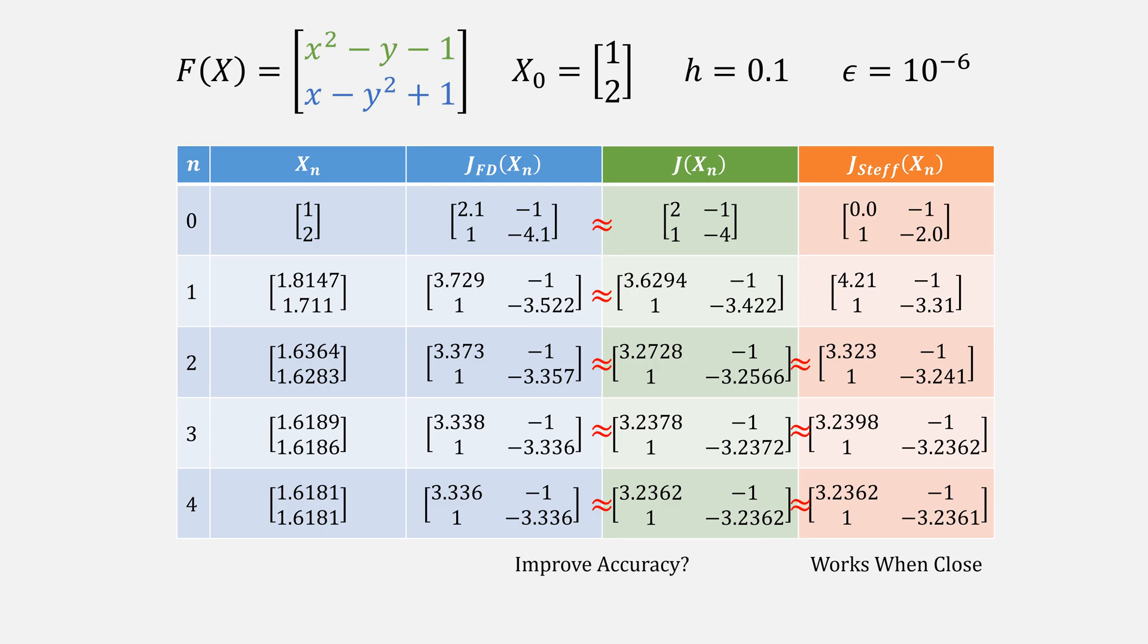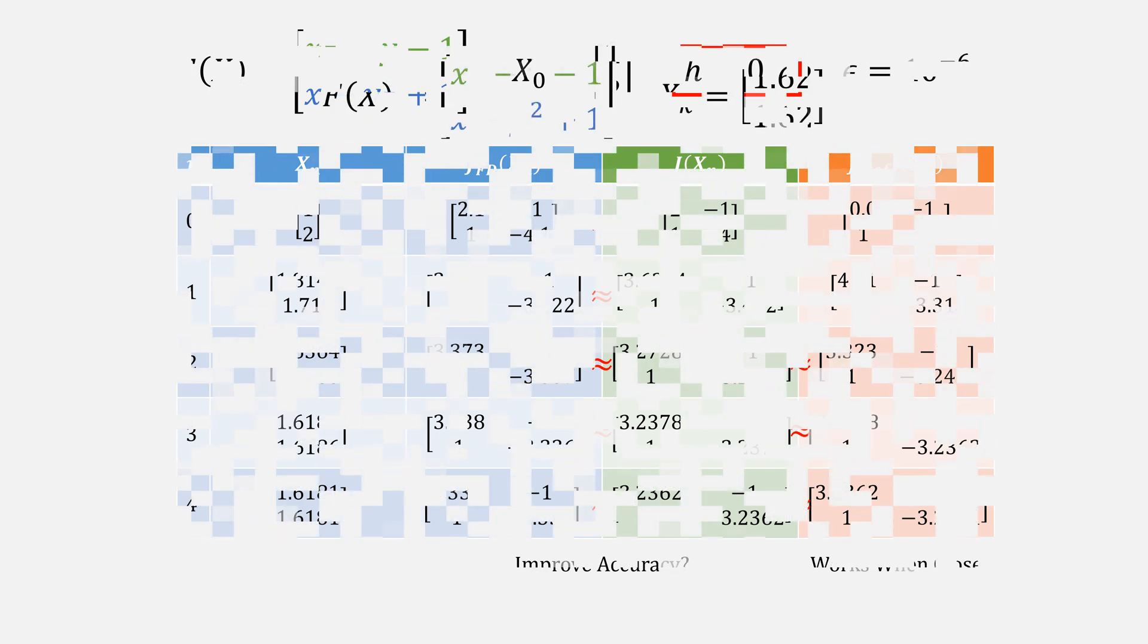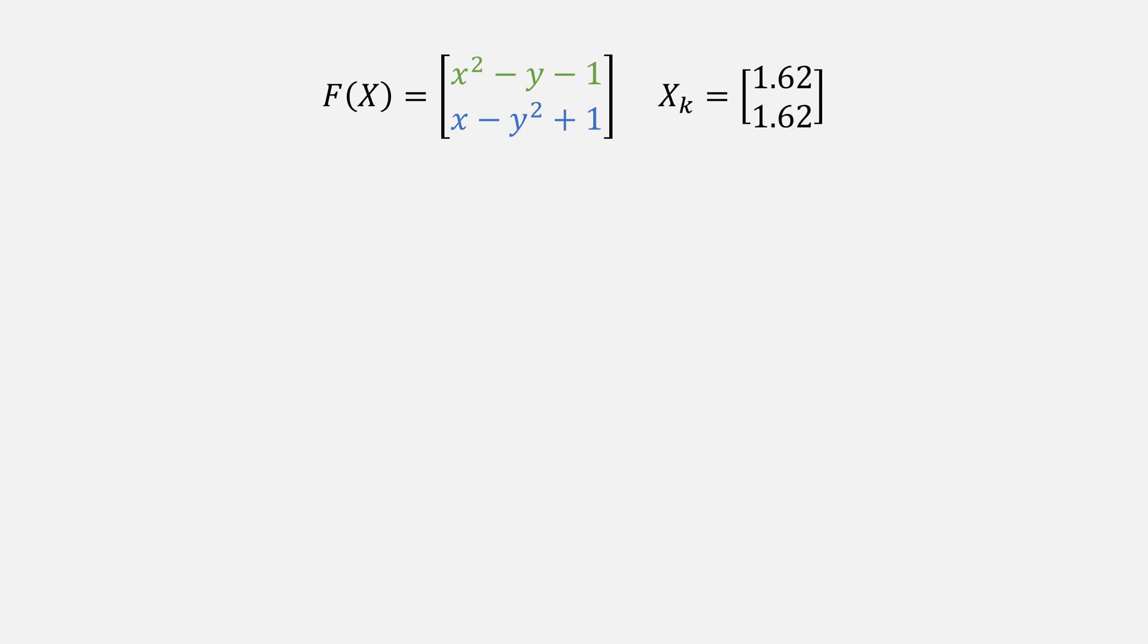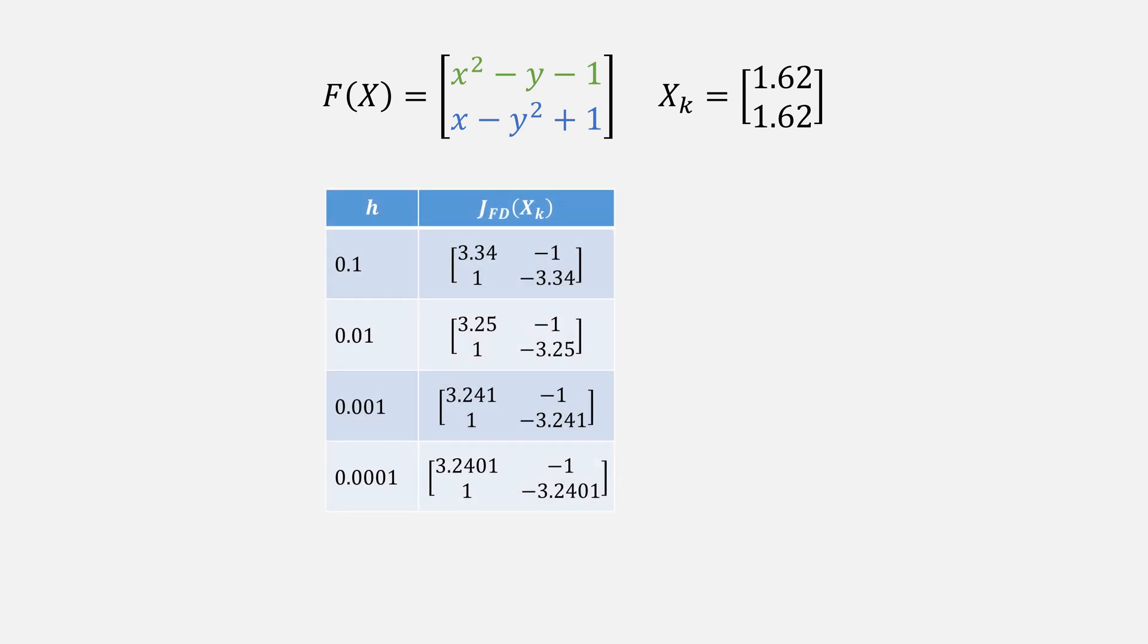Is there a way to improve the accuracy of finite difference method? There is. Notice that the value used for h was 0.1. What if we change that? Here's the same example, but only looking at the point 1.62, 1.62. As we use smaller and smaller values for h, we get much more accurate to the Jacobian at that point. It's even better than Stephenson's method.